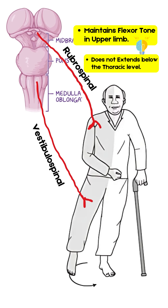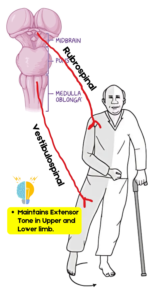The rubrospinal tract is responsible for increasing the flexor tone in the upper limb and inhibiting the extensor tone. Because the rubrospinal tract does not extend beyond the thoracic spine, it does not have any control over the lower limb. The vestibulospinal tract, which originates from the medulla, is responsible for increasing the extensor tone in the upper as well as the lower limb.